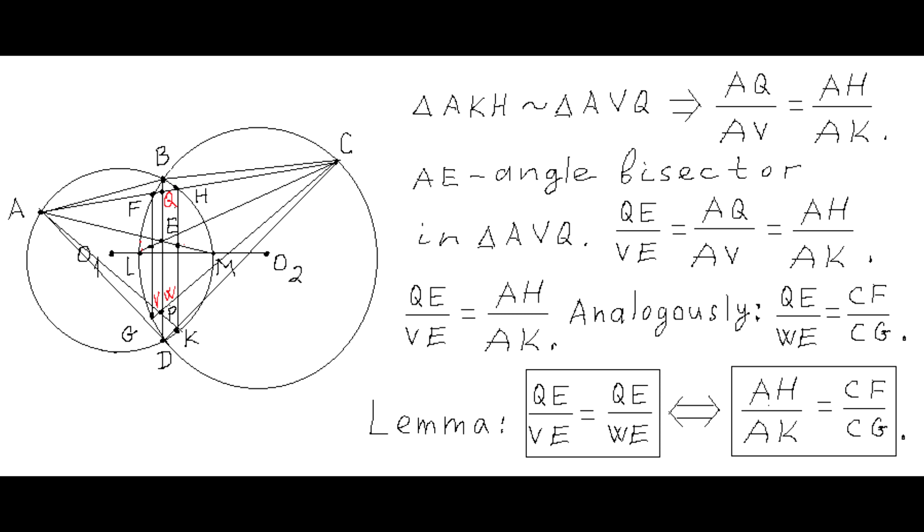Then we apply the angle bisector theorem to triangles AVQ and CWQ, from which it follows that segments VE and WE are congruent if and only if two ratios AH to AK and CF to CG are equal.